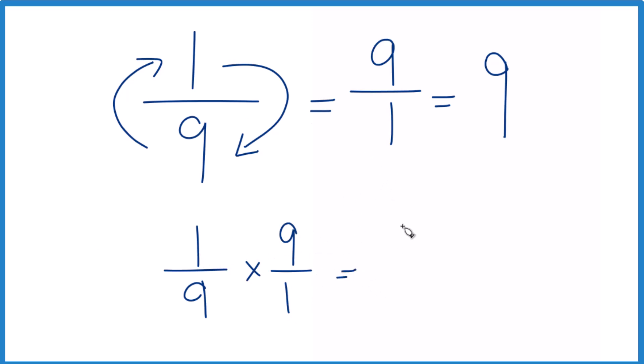One times nine, that's nine. Nine times one is nine. And we know that nine divided by nine is one. So we did this correctly. The reciprocal for one-ninth is nine.